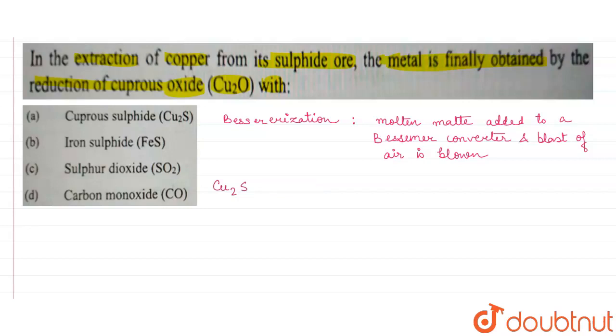And the reaction is actually like this: Cu2S plus O2, that is the air that we are getting, and this gives us Cu2O plus SO2. For balancing this equation we need 2 over here, 3 here, 2 here, and again 2 here.